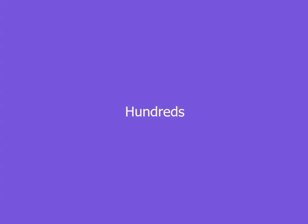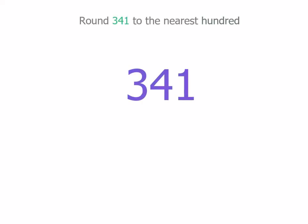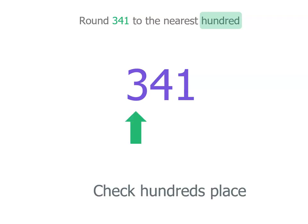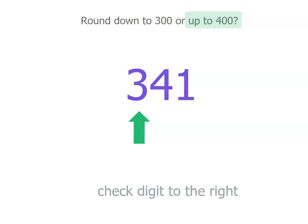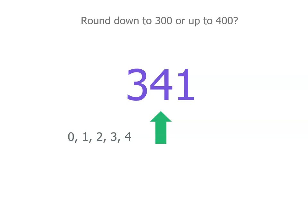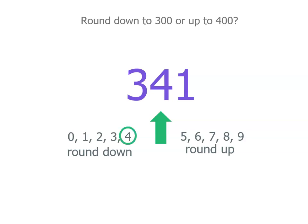Now let's try one with the hundreds. We're looking at 341. It doesn't matter how many digits we've got — it matters where we're rounding to. We're rounding to the nearest 100, so we check the hundreds place, which is 3. That means the 100 before it is 300 and the 100 after is 400. We move one place to the right and we've got a 4. Since 4 or less means round down, we're rounding down to 300.